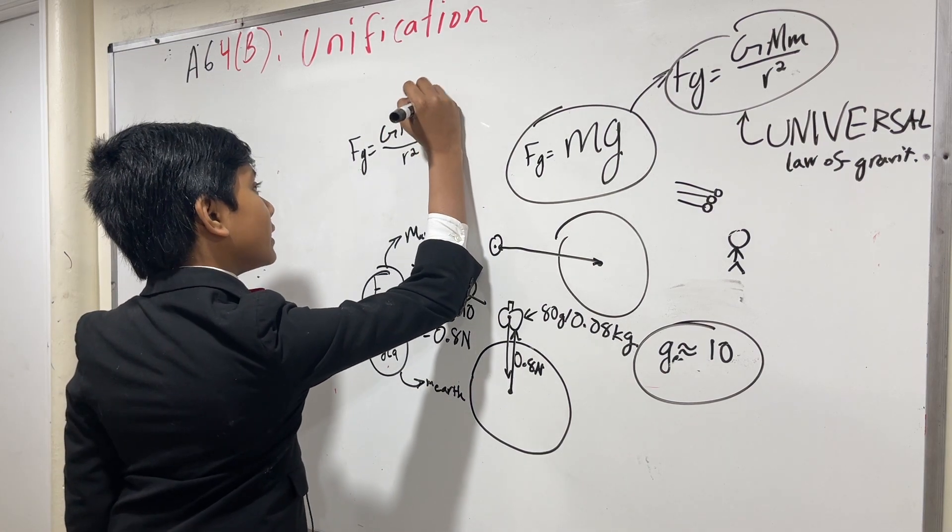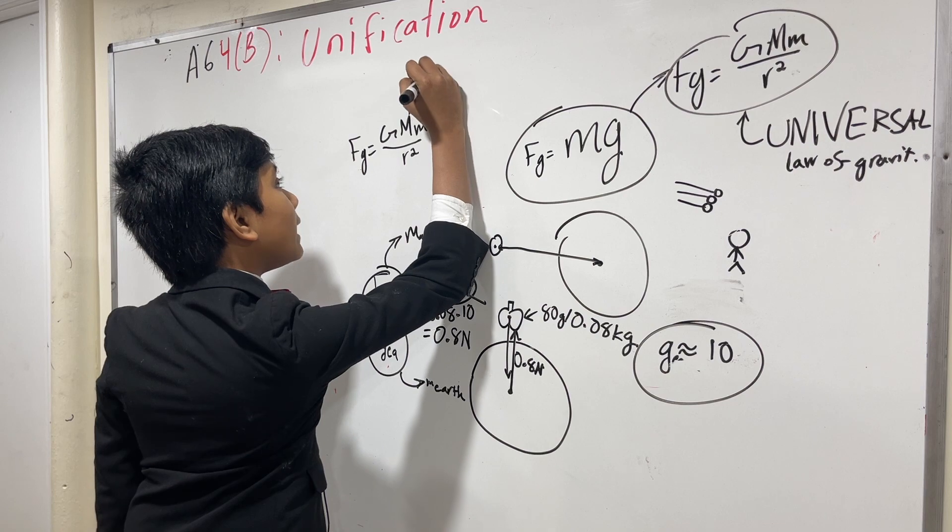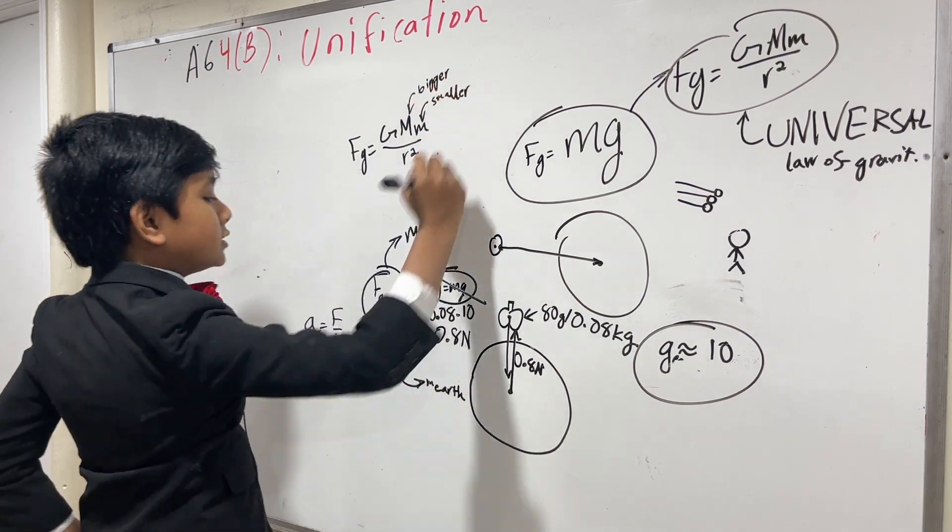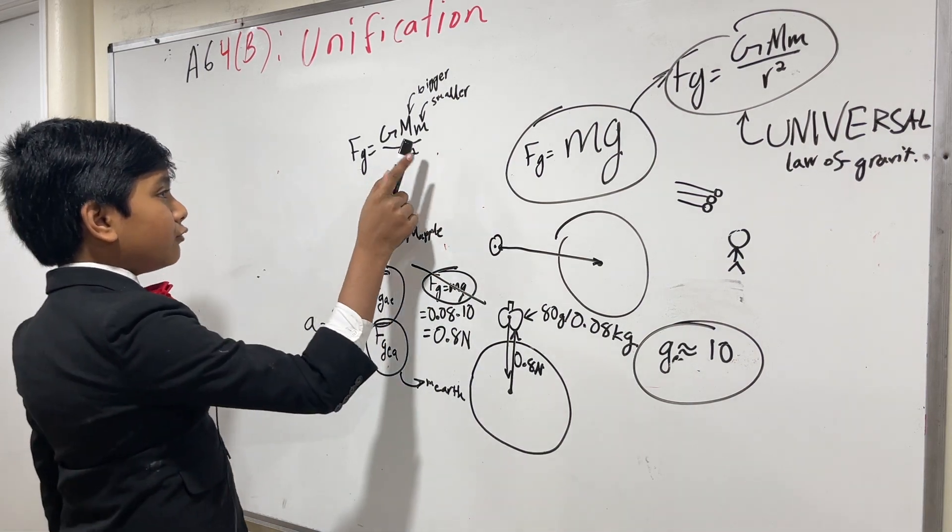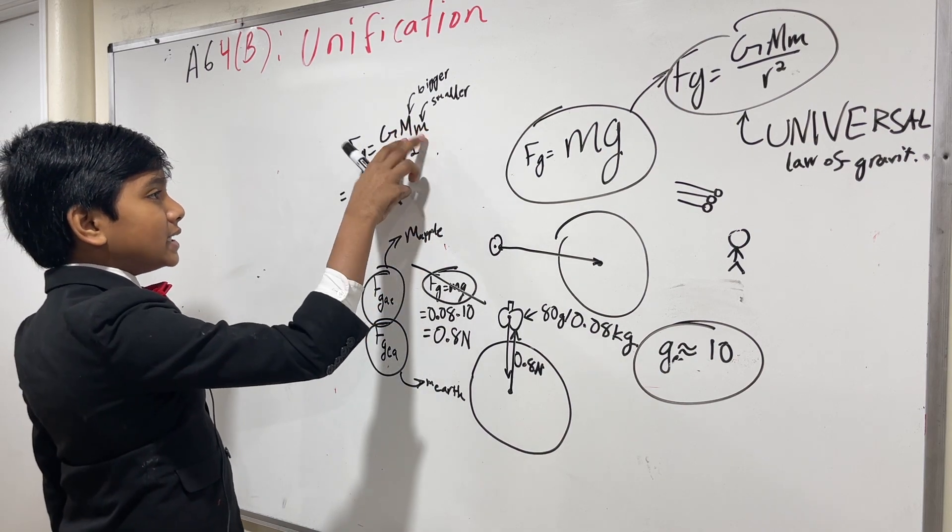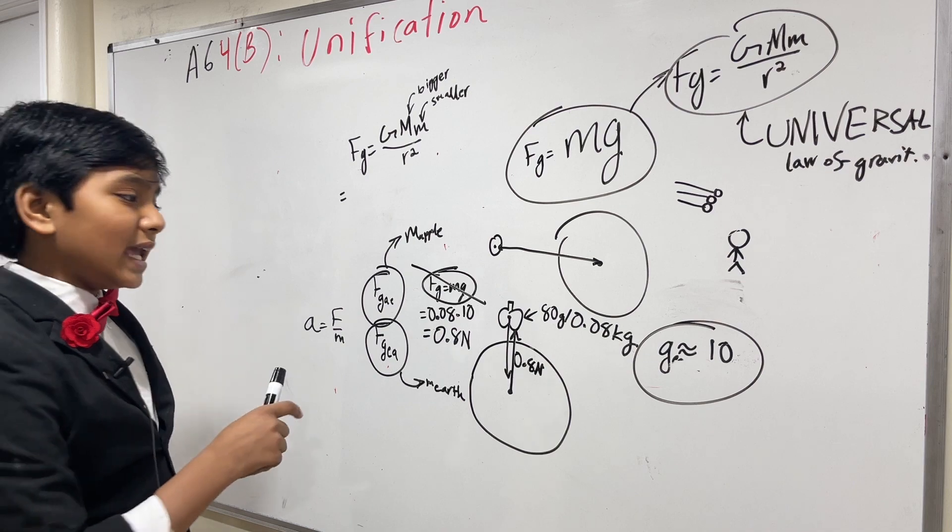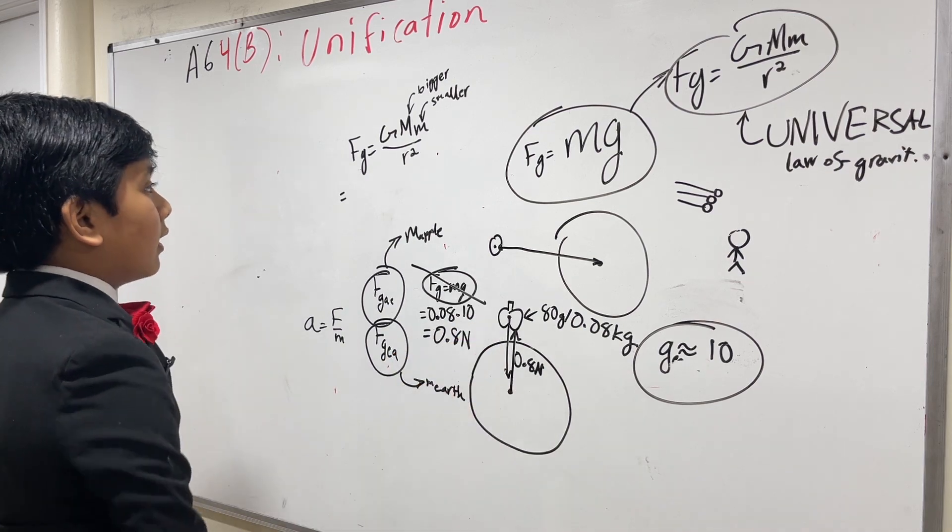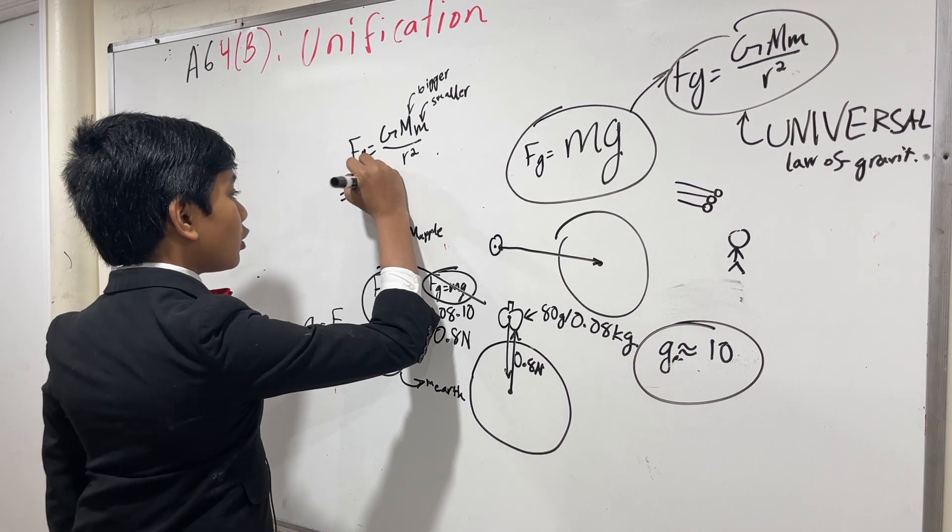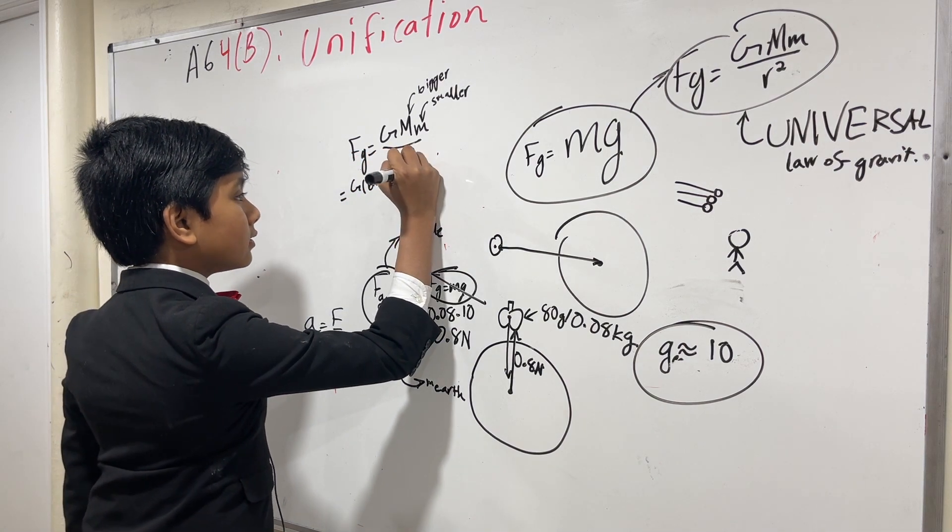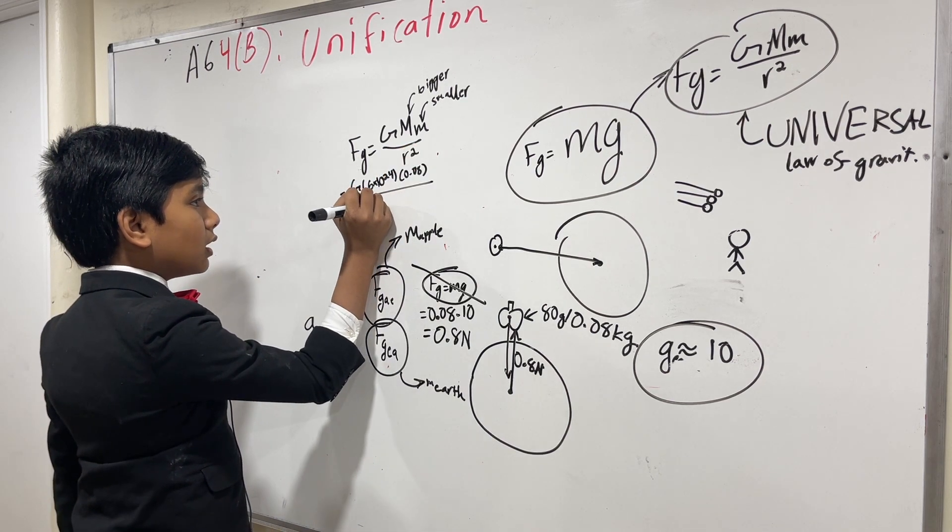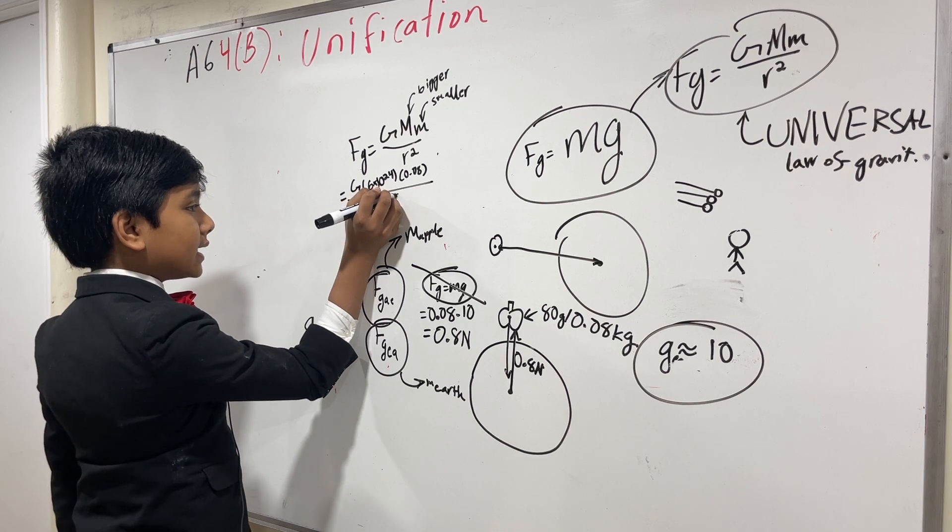If you don't understand what big M or little m mean, this is the bigger mass, and this is the smaller mass. Hopefully that was obvious, though. So, that means that Fg, no matter the placement of the objects, will be the same for this two-body system. So, I mean, we have G times the mass of the earth times the mass of the object over the distance squared. So, 6.4 times 10 to the 6th squared.